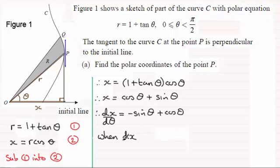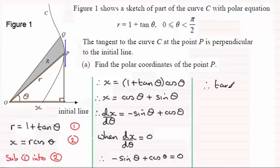So we know that's when dx by dθ equals 0. So in other words, minus sine theta plus cosine theta equals 0. And very easy equation because rearranging this is just going to give us tan theta equals 1.